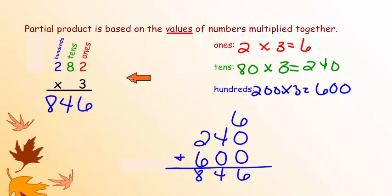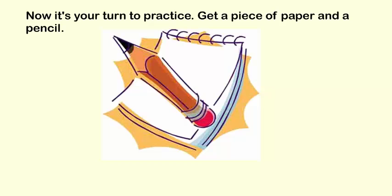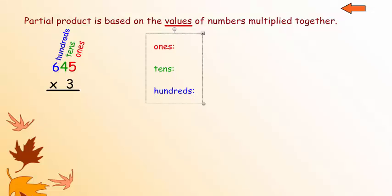This is a very simple process. You just have to make sure you get the ones place, the tens place, and the hundreds place, and write down their values. Let's try another one — make sure you have a piece of paper and a pencil, and practice on your own. Go ahead and start, and you can pause the video. When you're done, restart the video and you'll be able to check your answers.